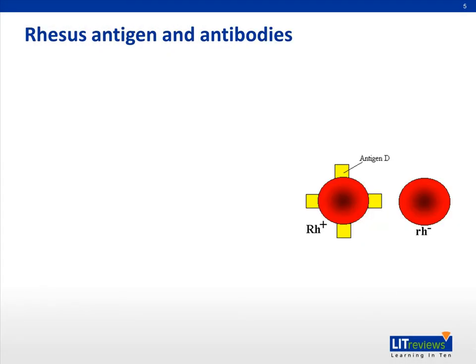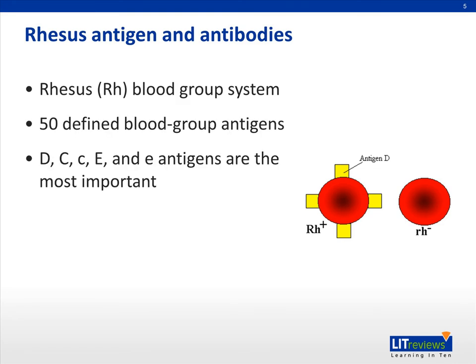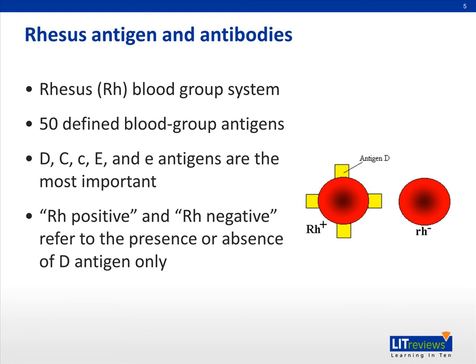First, let's begin with basic background of blood groups and antigens to better understand isoimmunization. Red blood cells contain a variety of antigens, which belong to the Rhesus, or Rh, blood group system. There are 50 defined blood group antigens, among which the antigens D, C, lowercase c, E, and lowercase e are the most important. The commonly used term Rh factor refers to the Rh positive or Rh negative, referred to D antigen only.